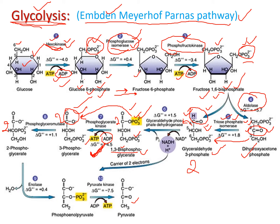In step eight, 3-phosphoglycerate is converted to 2-phosphoglycerate. The molecular formula is the same for both, but the phosphate group shifts from the third carbon to the second carbon — making these positional isomers. This isomerization reaction is catalyzed by phosphoglycero mutase.